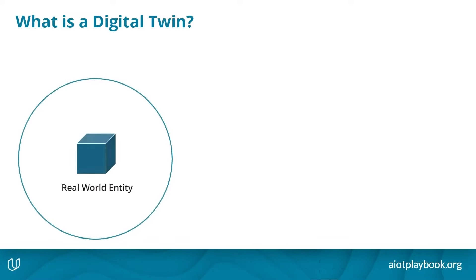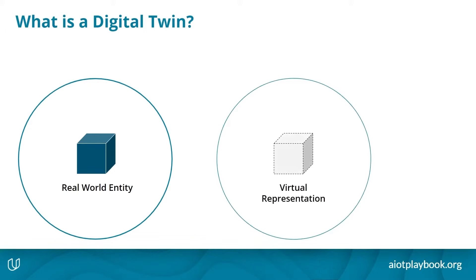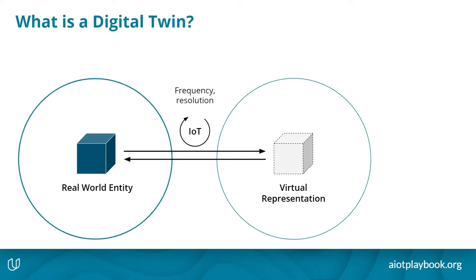What is a digital twin? A digital twin starts with a real-world entity of which we want to create a virtual representation for further processing and interacting with the real-world entity. So that means we need to create a link. The big question is with which frequency do we get data from the real-world entity and what is the resolution of the data?